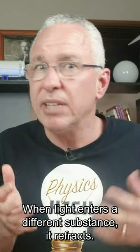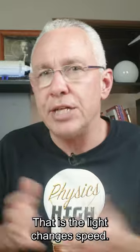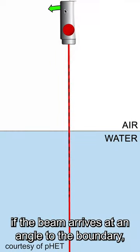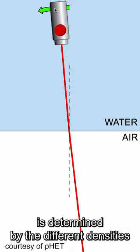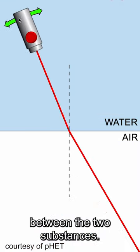When light enters a different substance, it refracts—that is, the light changes speed. If the beam arrives at an angle to the boundary, it bends. At that boundary, the direction and the amount is determined by the different densities between the two substances.